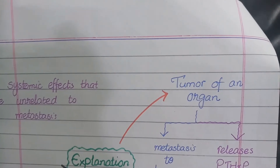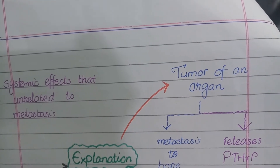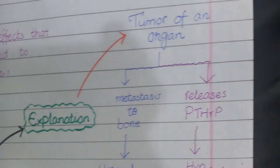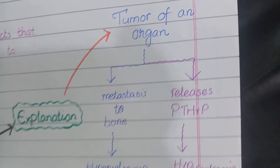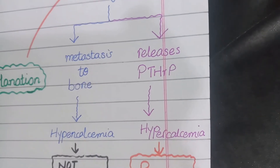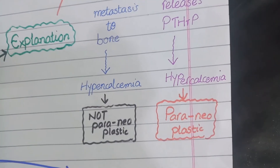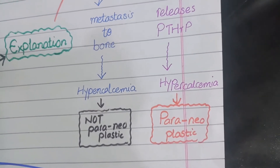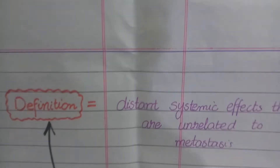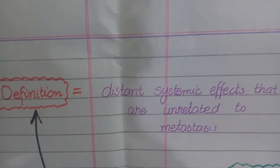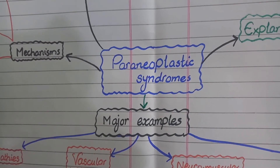Let's move to another similar case. The same tumor does not metastasize and remains in place, but it releases a chemical called parathyroid hormone-related protein. This hormone mimics the action of parathyroid hormone and acts on bone, releasing calcium into the blood and causing hypercalcemia. This time we call it paraneoplastic because it is not related to metastasis. This justifies our definition that paraneoplastic syndromes are distant systemic effects of a tumor unrelated to metastasis.